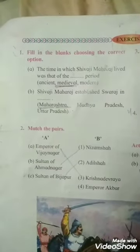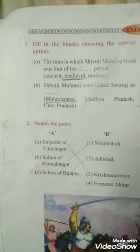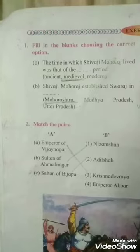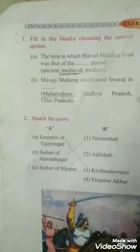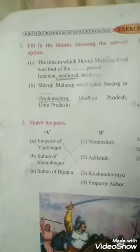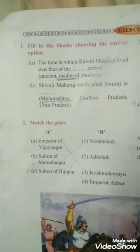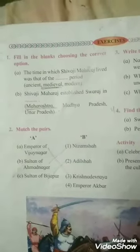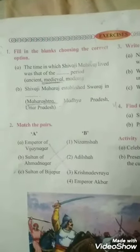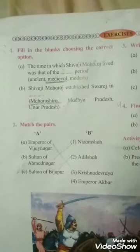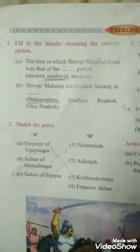There are three periods: Ancient, Medieval, and Modern. The Ancient period is the first period. The second one is Medieval — neither too old nor too modern. Today we are living in the Modern period, but Shivaji Maharaj lived in the Medieval period.